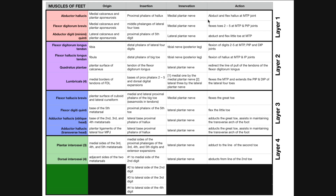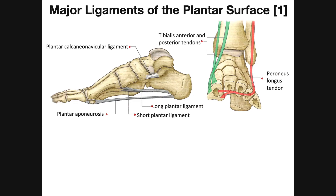Before we get into all these individual muscles and all the layers, we need to have a good reference point so we know what we're talking about when we say a superficial layer — which will turn out to be layer 1 — or a deep layer, layer 4. To get that, we're going to look at this picture of this foot right here.